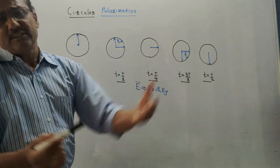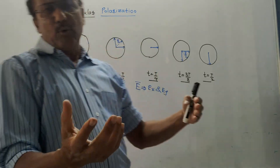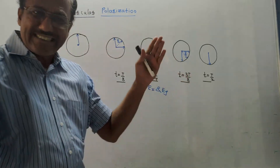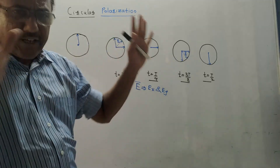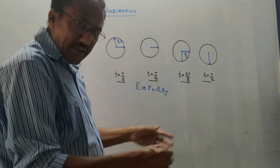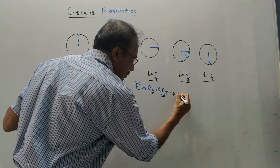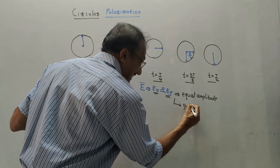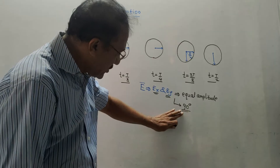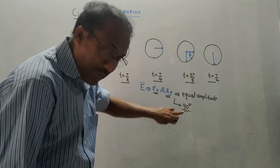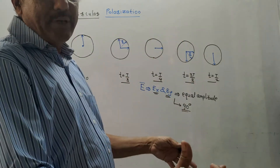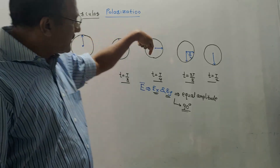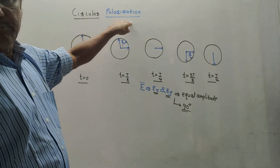The third type is circular polarization. From an exam point of view, in elliptical polarization the two components E_X and E_Y have unequal amplitudes. In circular polarization, the only difference is that the same two components have equal amplitudes and are phase shifted by 90°. This is the condition for circular polarization. When E_X and E_Y have equal amplitude with a 90° phase shift between them, tracing the path of the resultant E bar gives a circle. This is the concept of circular polarization.